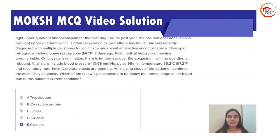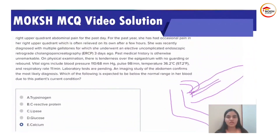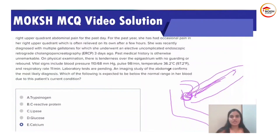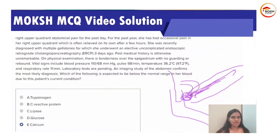The duct of the pancreas joins the common bile duct at the ampulla of Vater, which empties into the duodenum. If there is an obstruction, the pancreatic enzymes are unable to drain and back up into the pancreas. In the case of ERCP, a scope is passed from the mouth through the duodenum to visualize the common bile duct and any pathology. This can cause damage to the sphincter and duct. Because of this damage there is increased enzyme secretion and sometimes obstruction. Patients who have spasm of the sphincter of Oddi are more prone to this post-ERCP complication.